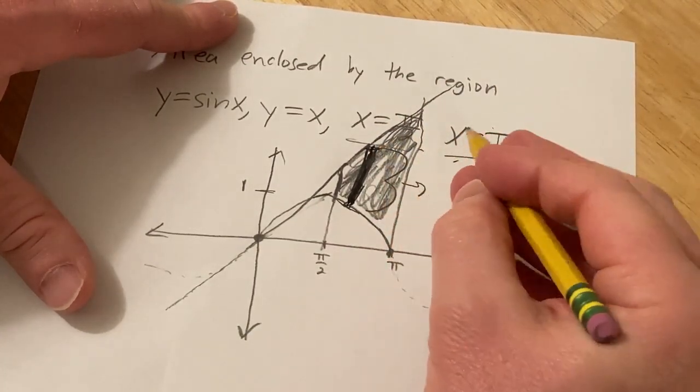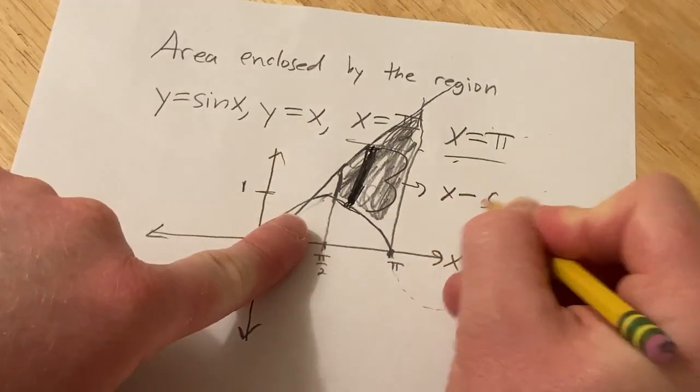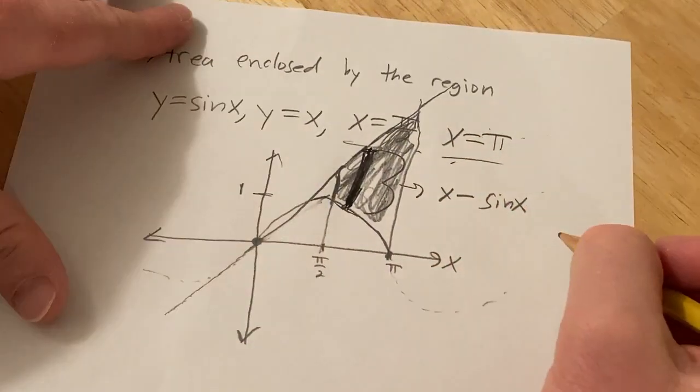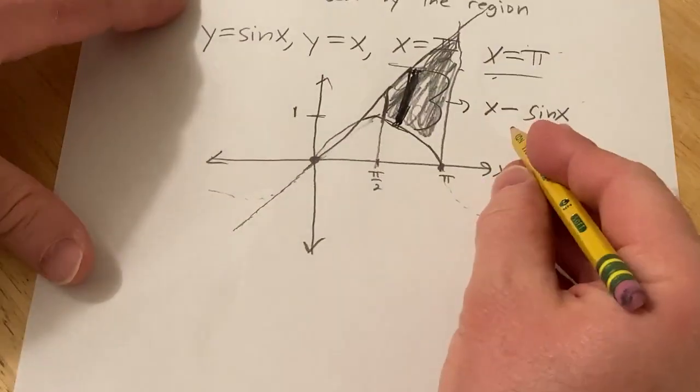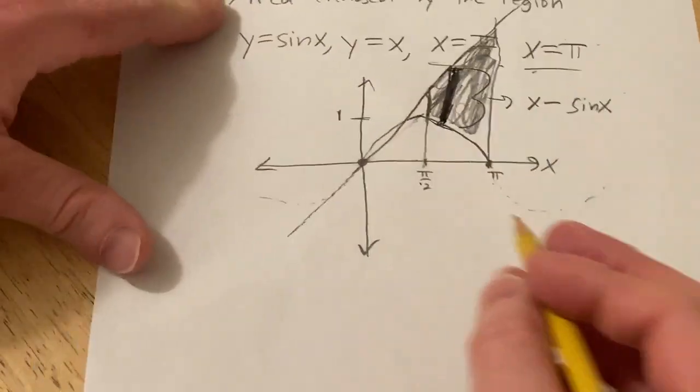So the height of the rectangle is going to be x minus the bottom function is sine x. And basically, now we just have to integrate that from pi over 2 to pi, and we have the area.